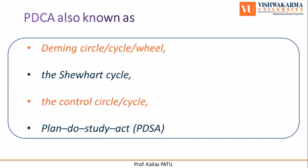It is also known as the Deming Cycle, Deming Circle or Wheel, Shewhart Cycle, Control Circle or Cycle, and Plan-Do-Study-Act.